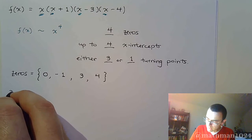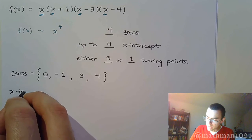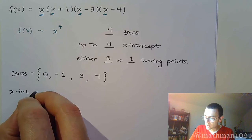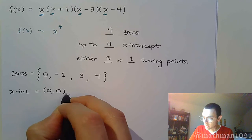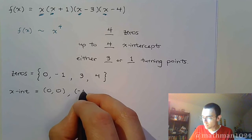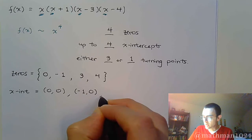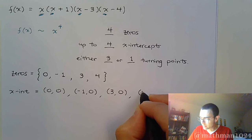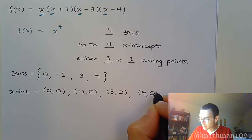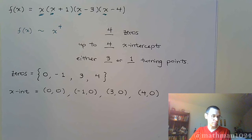Okay, we have this and let's go ahead and convert these guys into our x-intercepts. So the x-intercepts would be zero comma zero. And then we have negative one, zero, then three zero, and four zero.